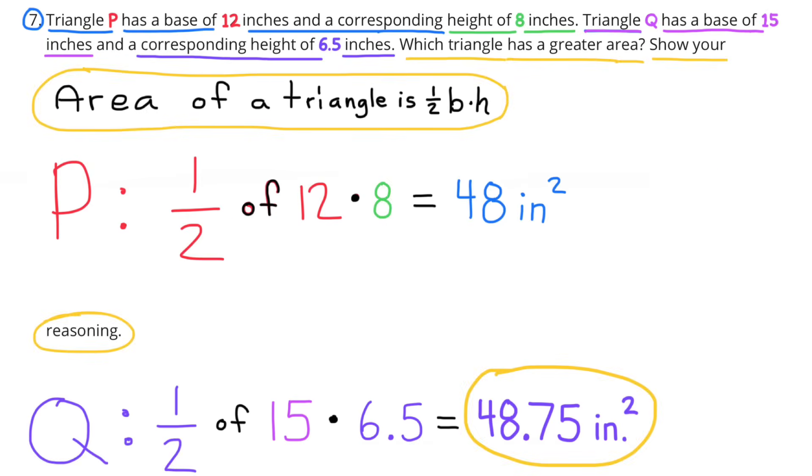Number 7. Triangle P has a base of 12 inches and a corresponding height of 8 inches. Triangle Q has a base of 15 inches and a corresponding height of 6 and 5 tenths inches. Which triangle has a greater area? Show your reasoning. Remember the formula for an area of a triangle is half the base times the height. Triangle P, half of 12 times 8 equals 48 inches squared. And triangle Q, half of 15 times 6 and 5 tenths equals 48 and 75 hundredths inches squared. So triangle Q has the greatest area with 48 and 75 hundredths inches squared.